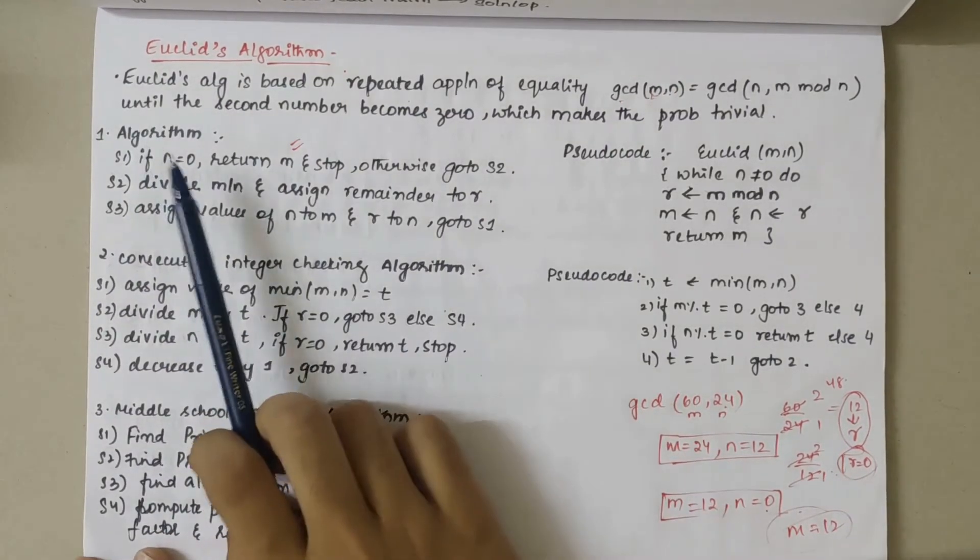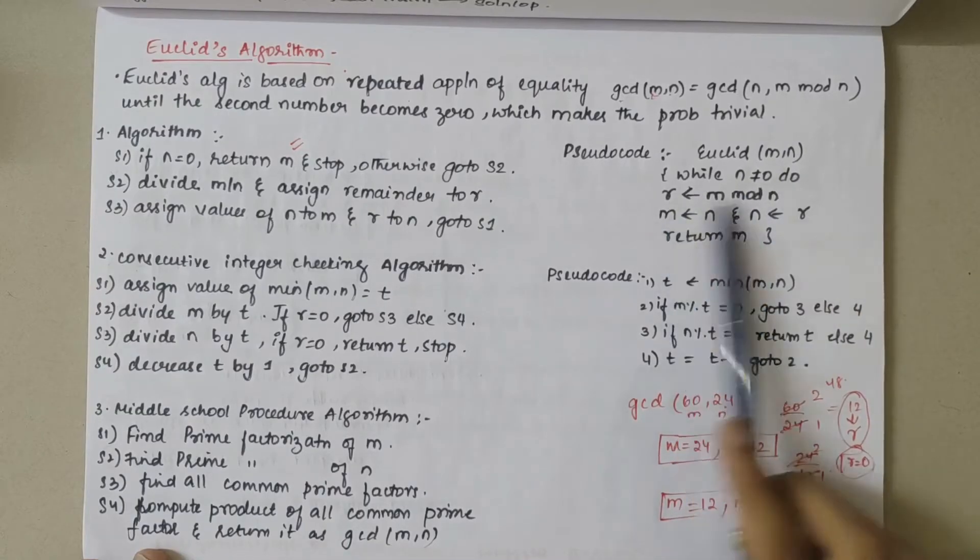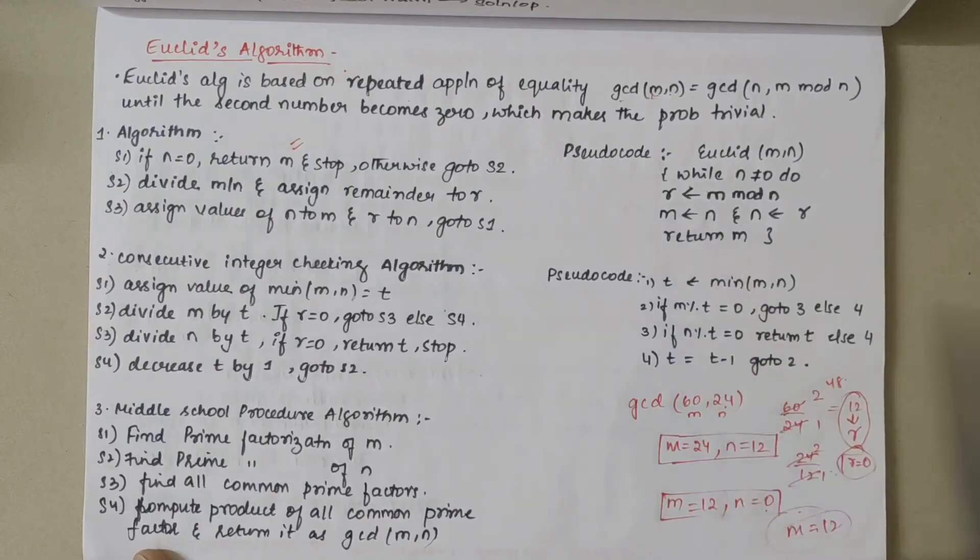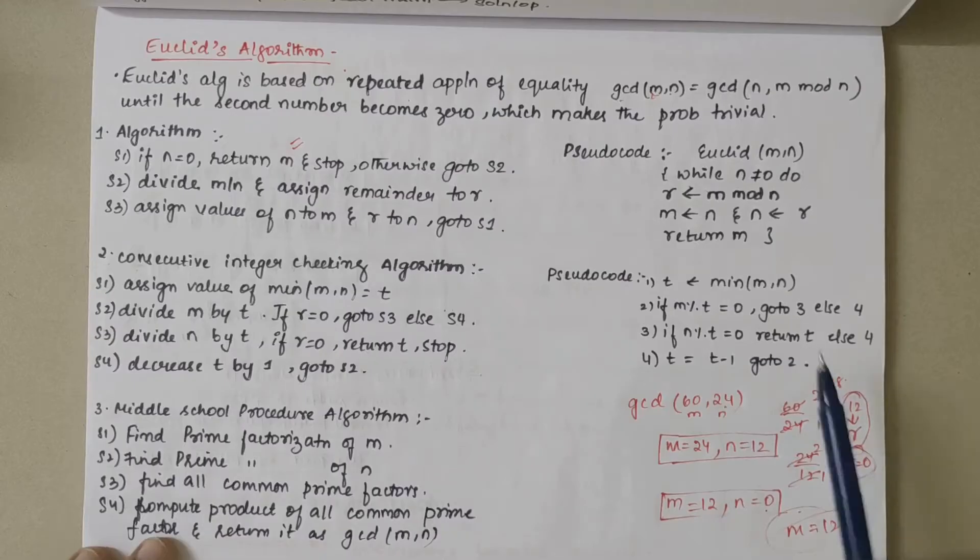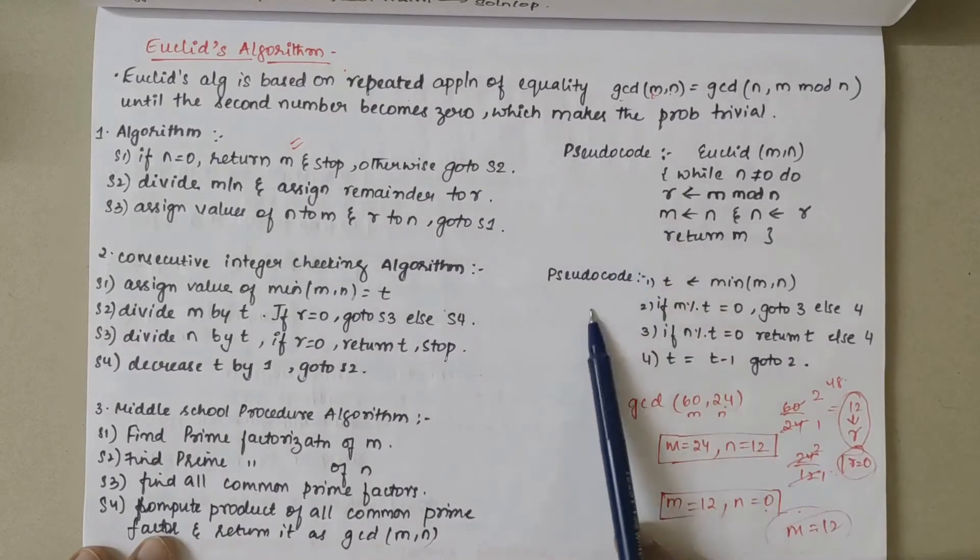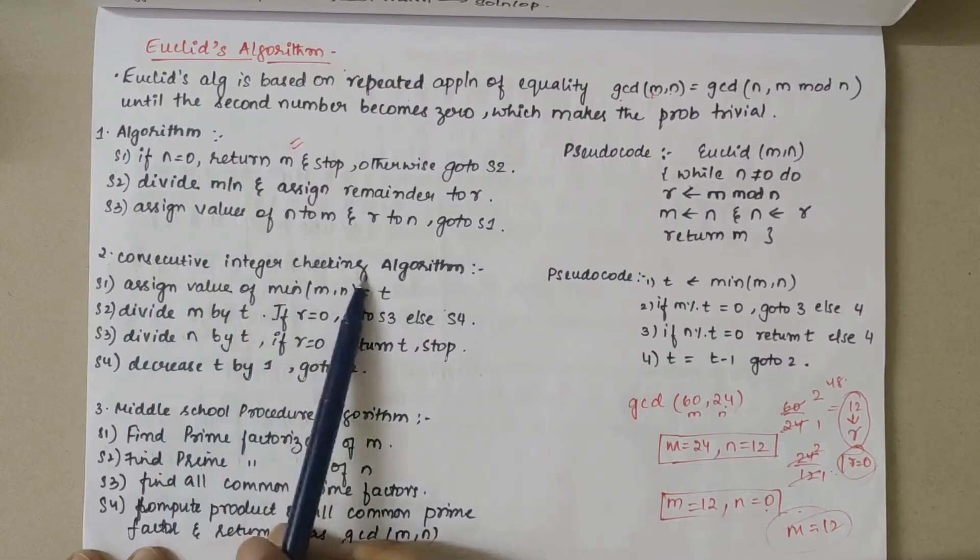First we have written the algorithm. Here we have the pseudocode part which is same: while n is not equal to zero, do r equals m mod n, the remainder is equated to r, then n value and r value are updated, and return m until this whole thing is satisfied. Here we can write pseudocode this way or that way, or this is the proper algorithm. Here we have a consecutive integer checking algorithm.